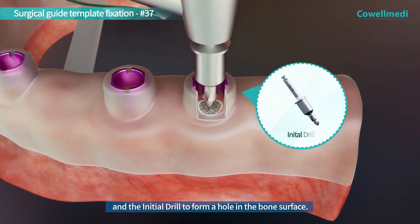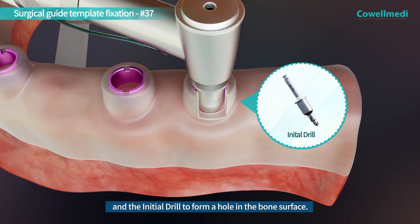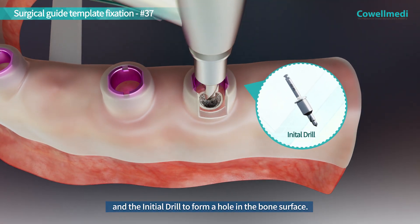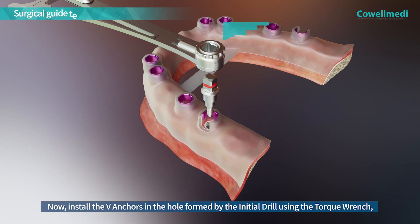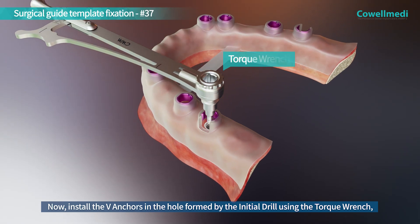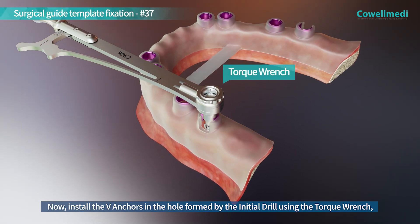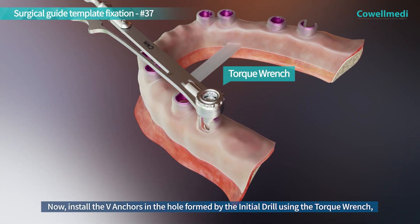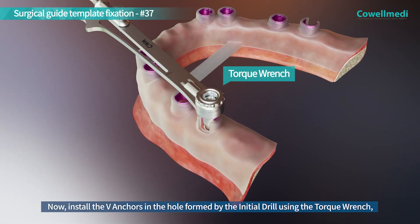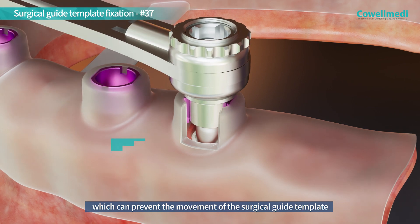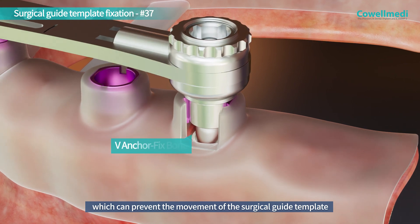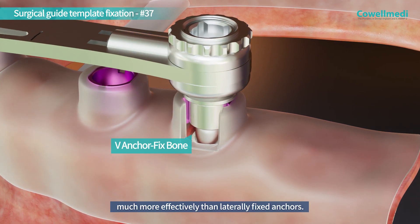Use the initial drill to form a hole in the bone surface, then install the V-anchors in the hole using the torque wrench, which can prevent the movement of the surgical guide template much more effectively than laterally fixed anchors.